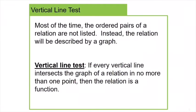A lot of times we don't have a list of ordered pairs or mapping notation — a lot of times we have a graph. So it's nice to have a way to look at the graph and quickly know whether you're dealing with a function. We have the vertical line test: if every vertical line intersects the graph of a relation in no more than one point, then that relation is a function.